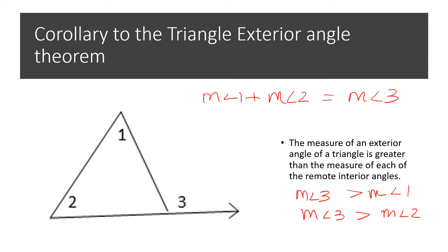So I think it's pretty much common sense, right? Because if the measure of angle one is greater than the measure of angle three, then this whole sum would be greater than the measure of angle three. And that's not what our original theorem says.